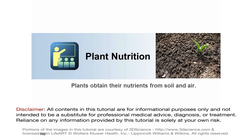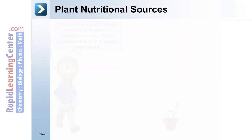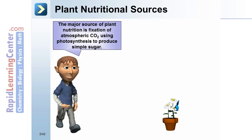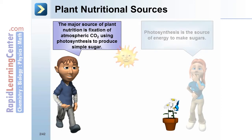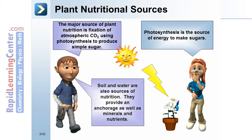Plant nutrition. Plants obtain their nutrients from soil and air. The major source of plant nutrition is fixation of atmospheric CO2 using photosynthesis to produce simple sugar. Photosynthesis is the source of energy to make sugars. Soil and water are also sources of nutrition, providing anchorage as well as minerals and nutrients.